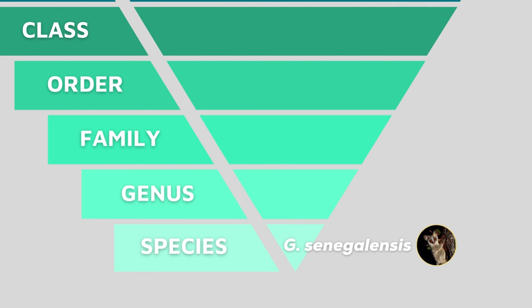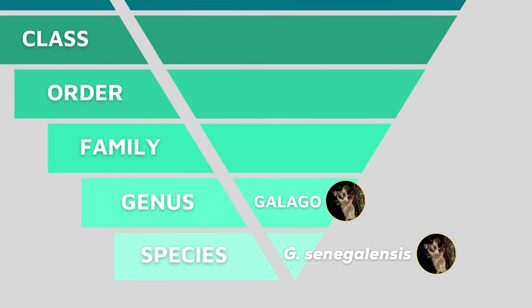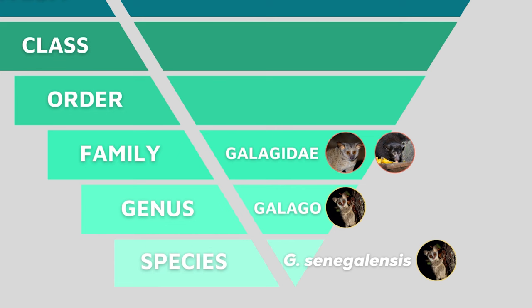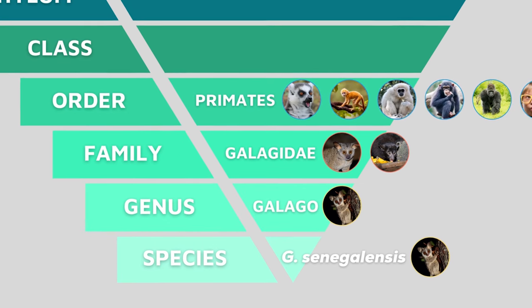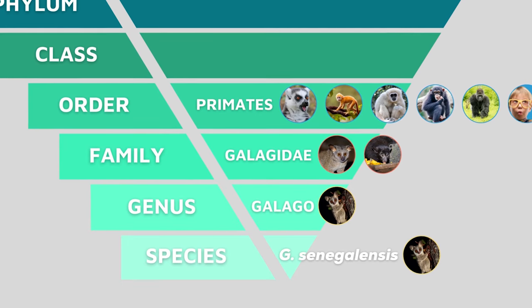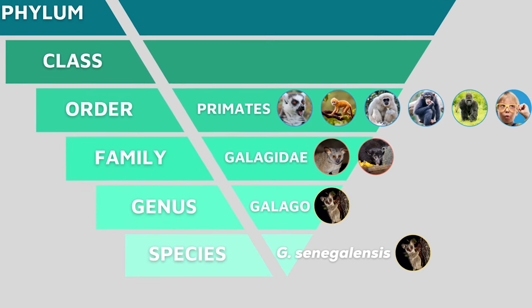Let's quickly put what we've learned into practice. Now that we know the scientific name of the bush baby, let's figure out where he belongs in our taxonomic system. We are here at the most specific level — the species level. He is called Galago senegalensis, so his species is G. senegalensis. The first part of the scientific name is for the genus, so that would be Galago. The family level is Galagidae, which includes several species of bush babies. The order is Primates, which includes lemurs, monkeys, gibbons, chimpanzees, gorillas, and even us humans.